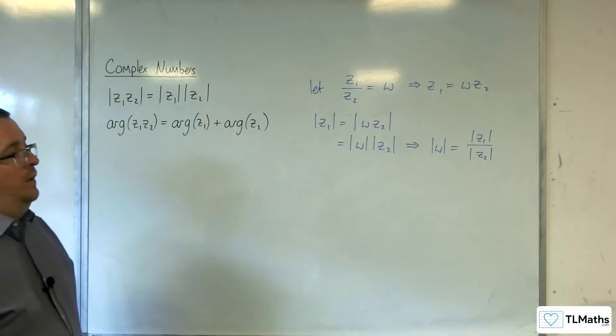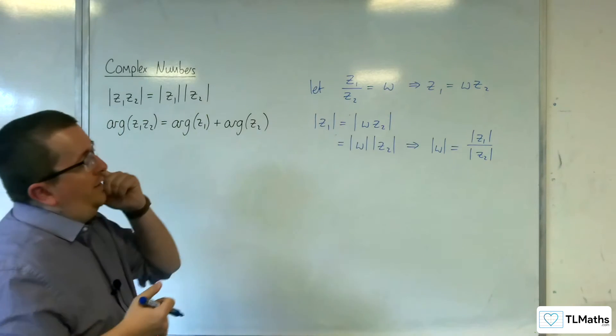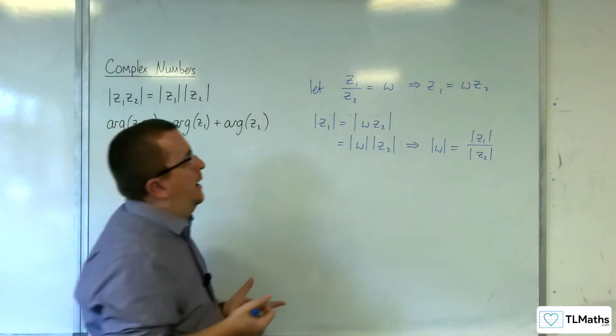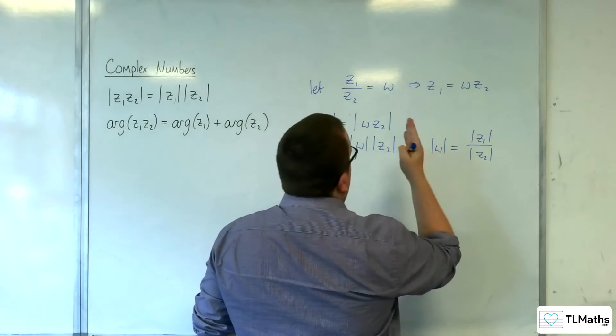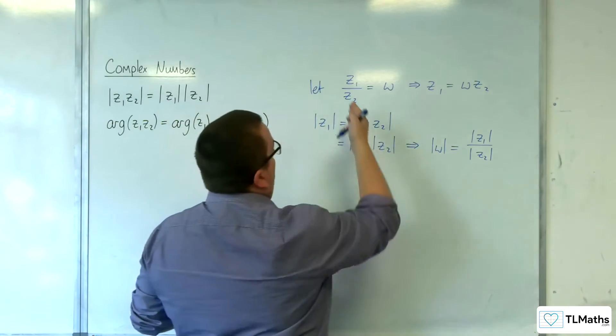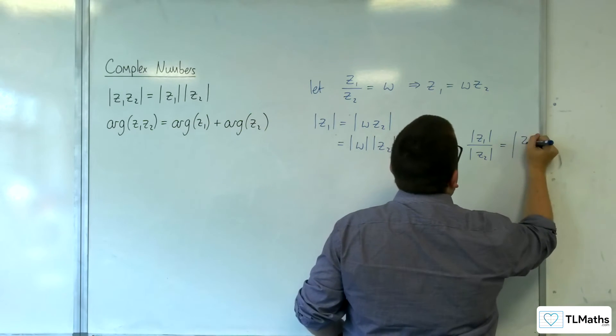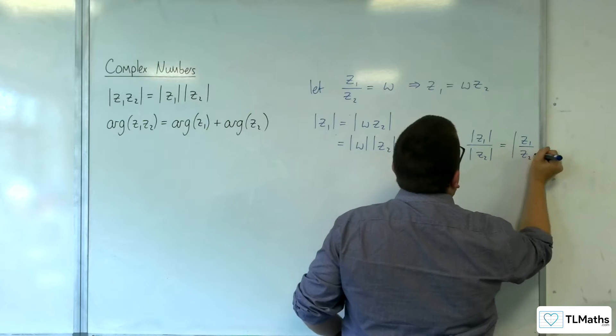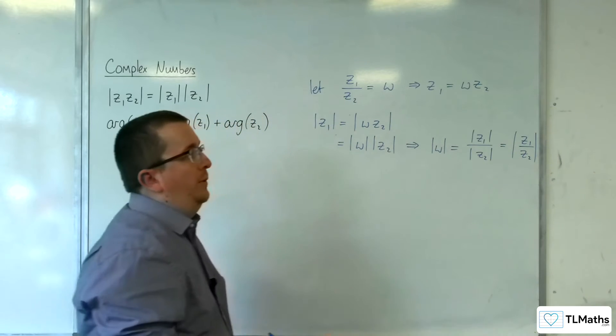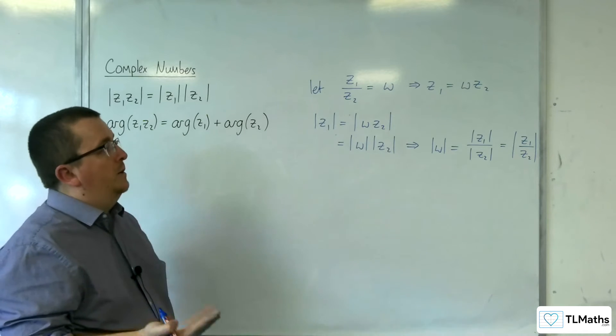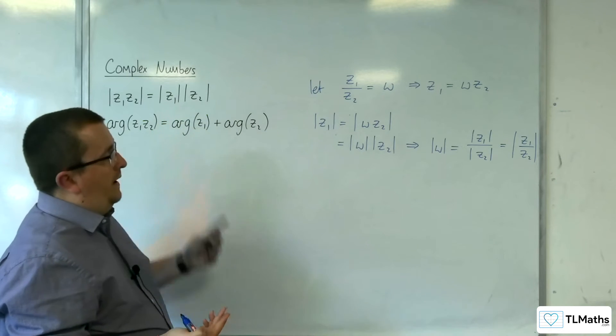So what this is then showing you is that I can just say that the length of Z1 over Z2 is the same as doing the length of Z1 divided by the length of Z2. And I can prove that result using that result there.